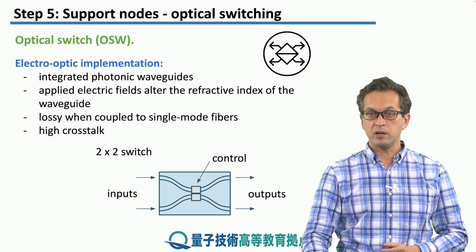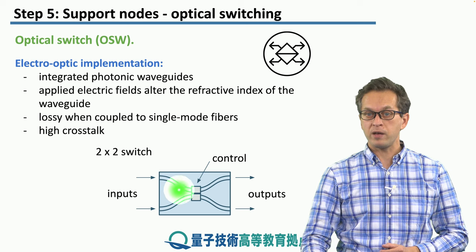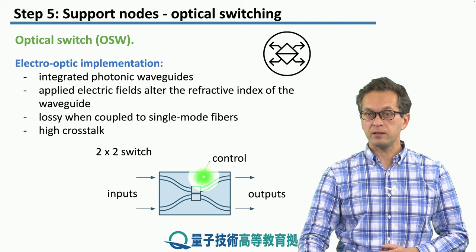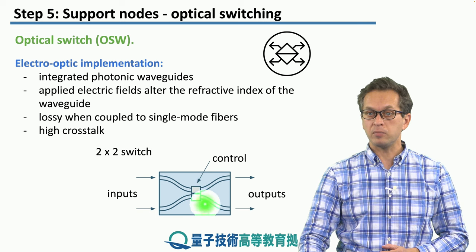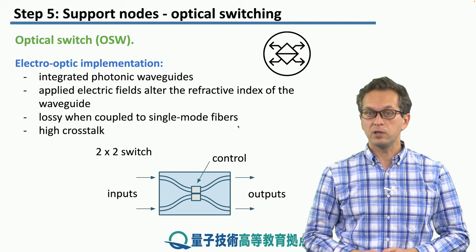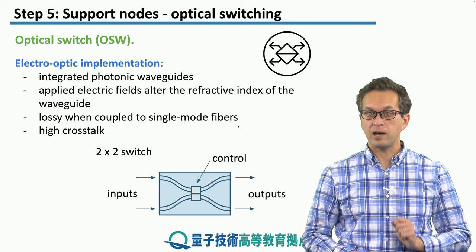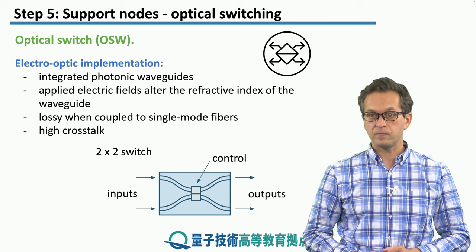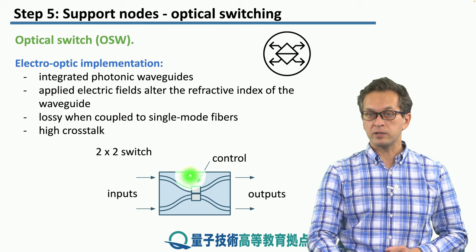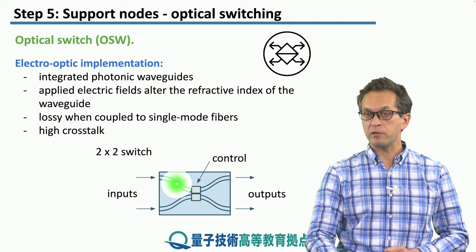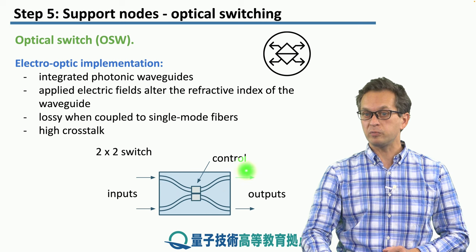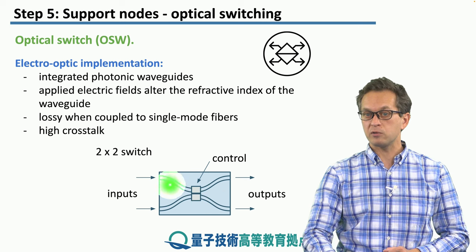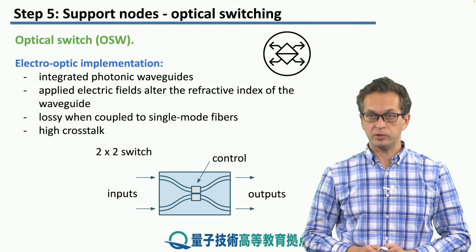For example, here we've got a wafer with waveguides etched into it. Represented by these two gray blocks is our control — this is where we apply the electric field to change the refractive index of the waveguide. Depending on the state of the control, our photons will simply go through from the input to the output, or they have a chance to cross and exit from the other output.